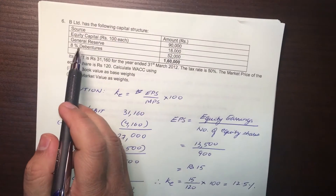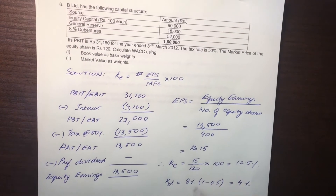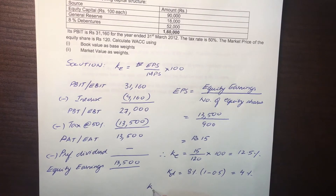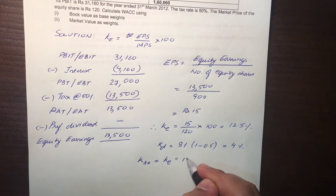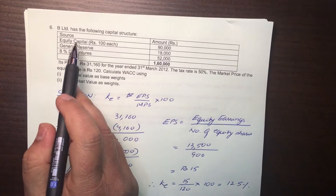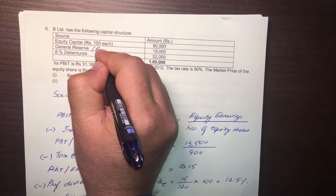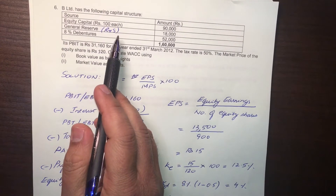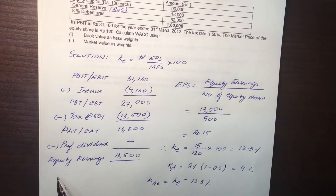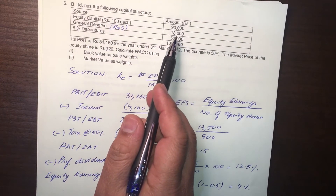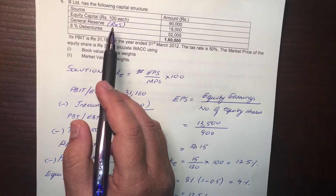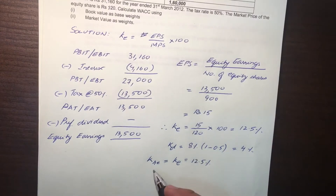Now we also have to find out the cost of general reserve — let's call it KRE. KRE will be equal to KE. The equity capital is external equity, but the general reserve comes from reserves and surplus, which is built up from equity earnings. A part of equity earnings goes as dividend to equity shareholders, and the other part goes to reserves and surplus. So this general reserve actually belongs to equity shareholders — it is called internal equity — and that is why we assume KRE equals KE.